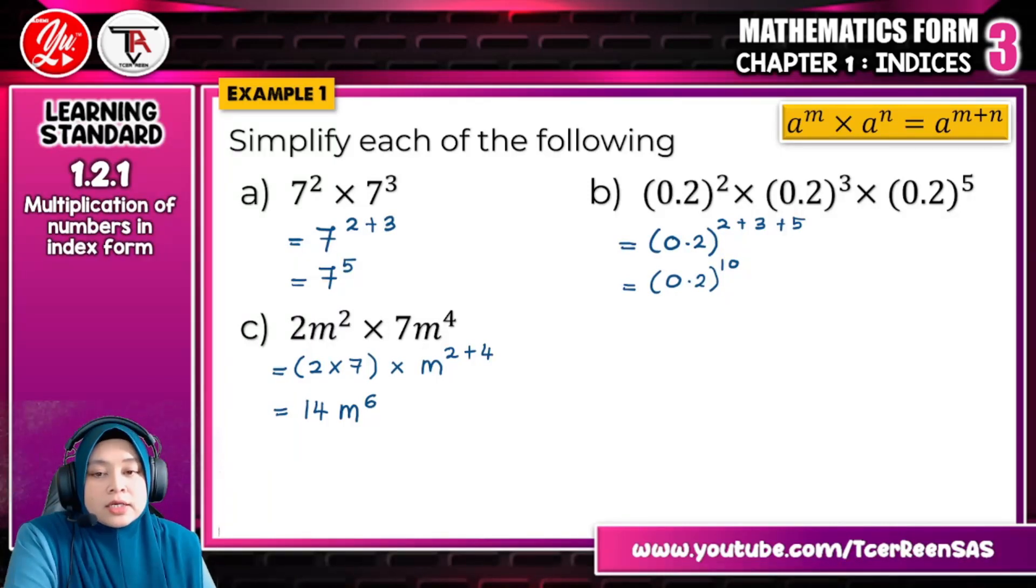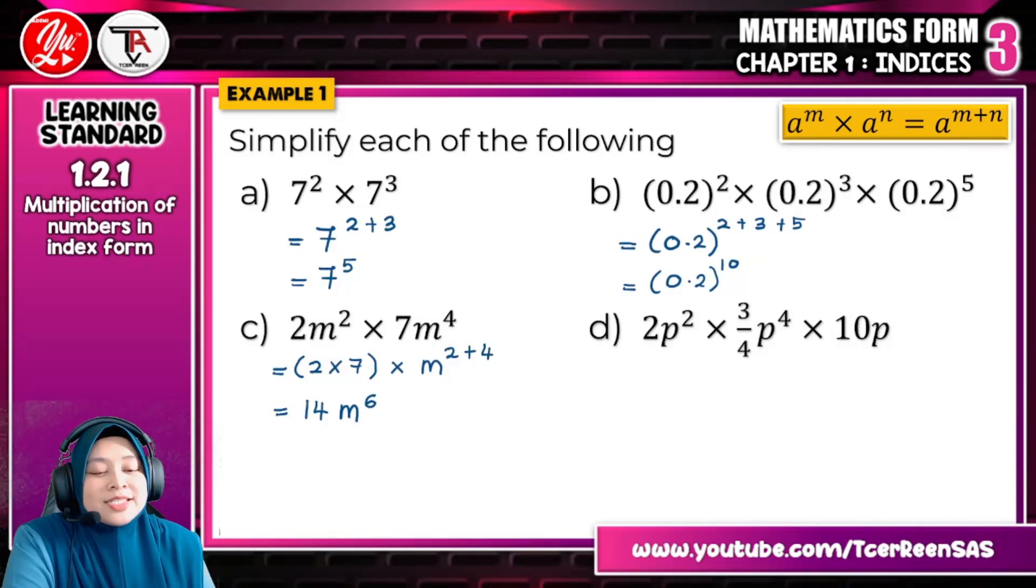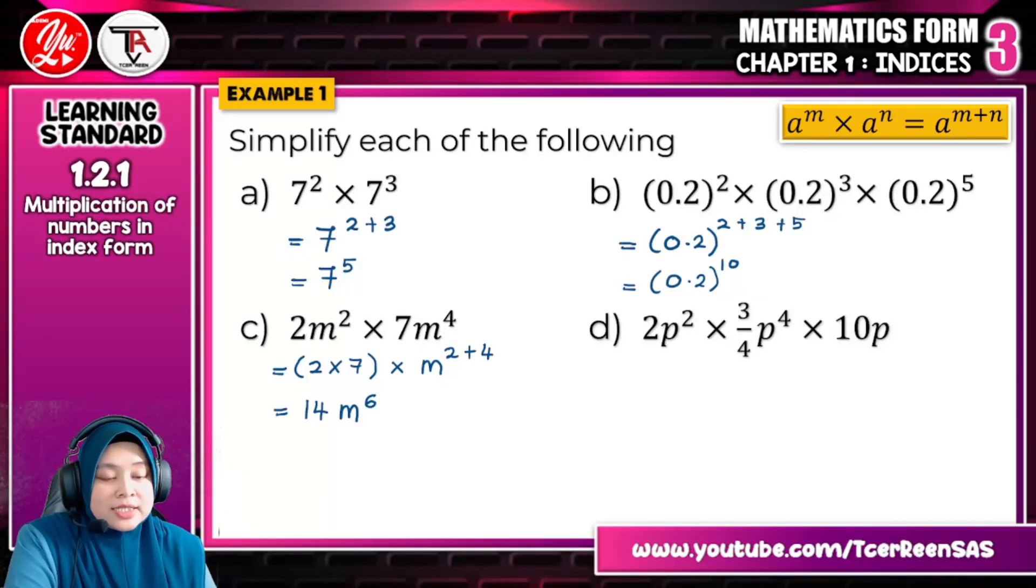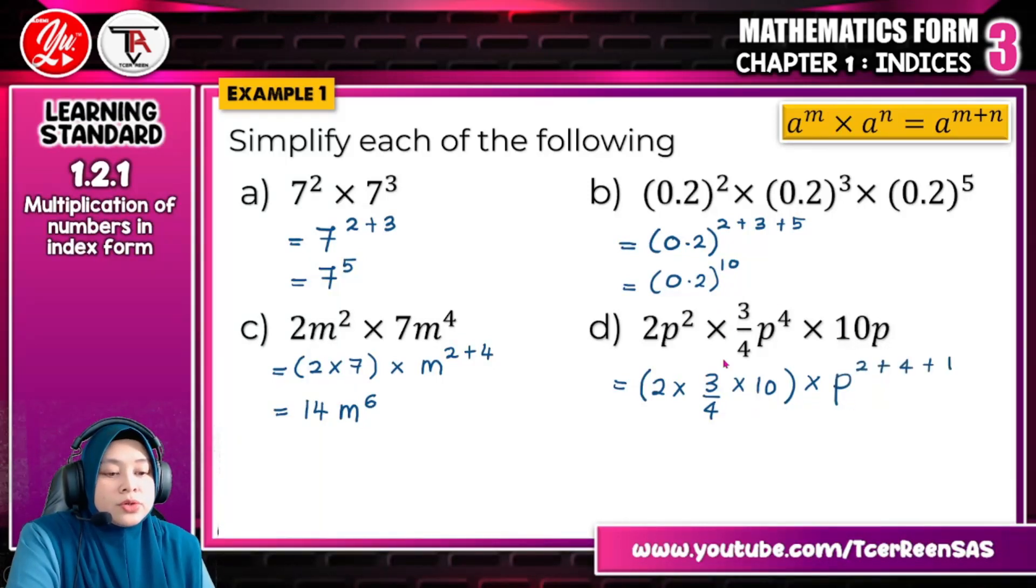Let us look at the final question for this example. A little bit long but it's okay, don't panic. Just look at where is the coefficient, where is the variable, and then where is the indices. Surely here P, P and P. So you can combine all the expression. Before that, you take the coefficient first, which is 2 times 3 over 4 times 10. What should you do to P and the indices here?